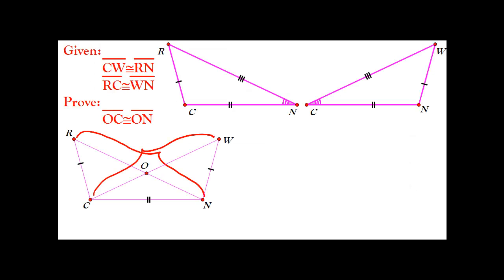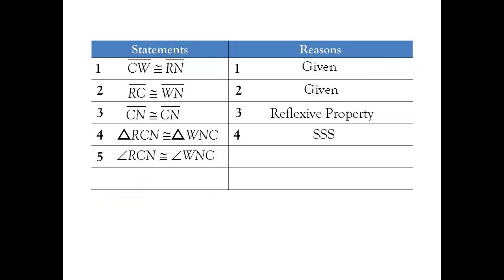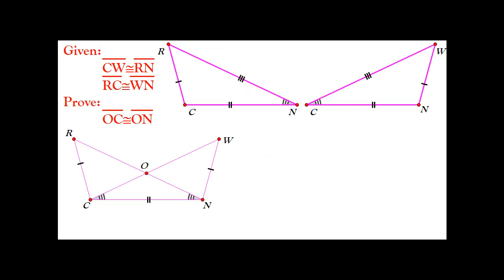Now, once we have that those two triangles are congruent, their corresponding parts are. So therefore, we know that angle RCN is congruent to angle WNC, and the reason for that is CPCTC, which stands for corresponding parts of congruent triangles are congruent. As you can see from our drawing here, I've transferred those tick marks to our original diagram.